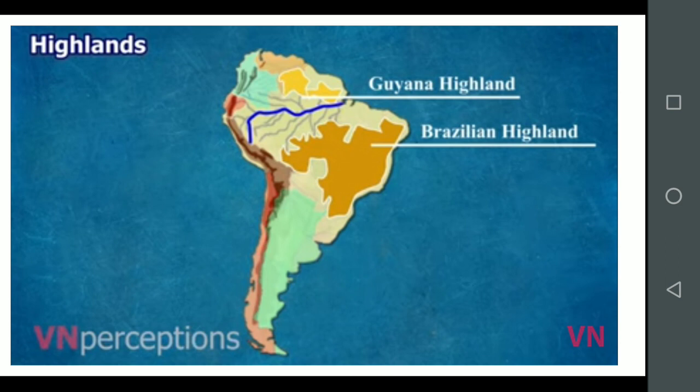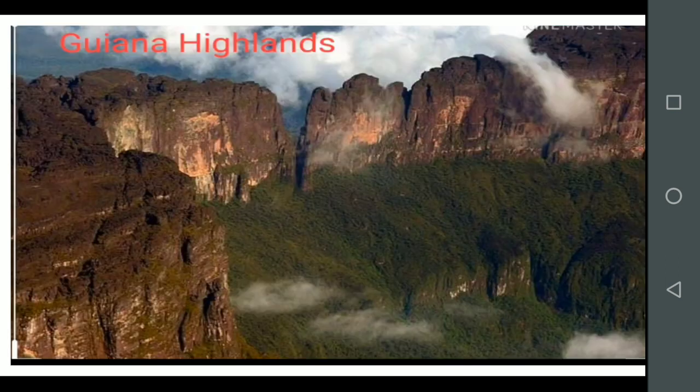The next physical division is the eastern highlands. The Guiana highlands and the Brazilian highlands form the eastern highlands. These two highlands are separated by the Amazon river. These highlands extend in the eastern part of the continent along the Atlantic coast.